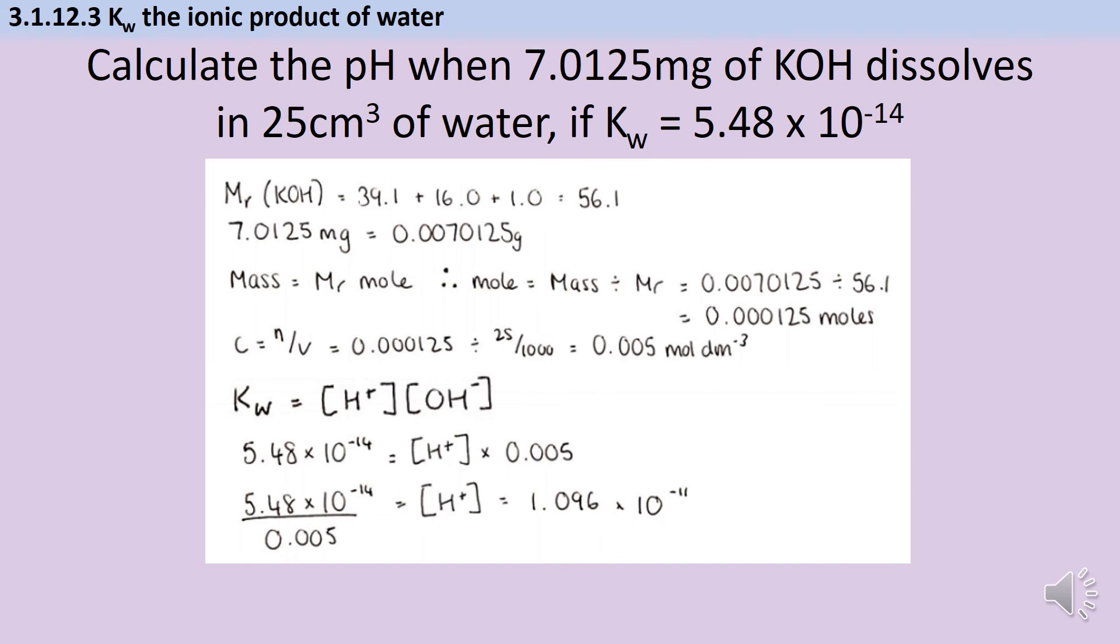Which in this instance is 1.096 times 10 to the minus 11. Now I can do pH being negative log base 10 of that concentration, which gives me a final answer of 10.96.